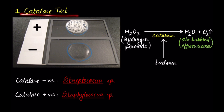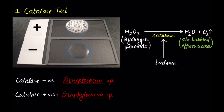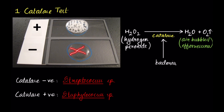If air bubbles or effervescence are not seen, then the bacteria is catalase negative — it does not produce catalase enzyme. This test is used to differentiate between Staphylococcus species, which is catalase positive (producing oxygen bubbles when inoculated in hydrogen peroxide), and Streptococcus species, which is catalase negative (not producing oxygen bubbles when inoculated in hydrogen peroxide reagent).